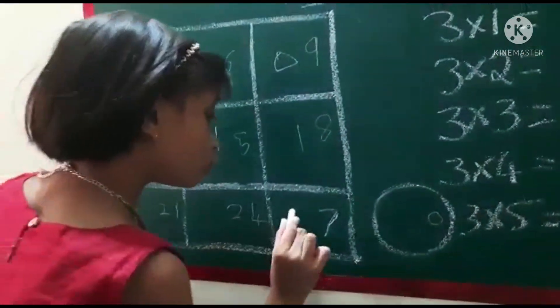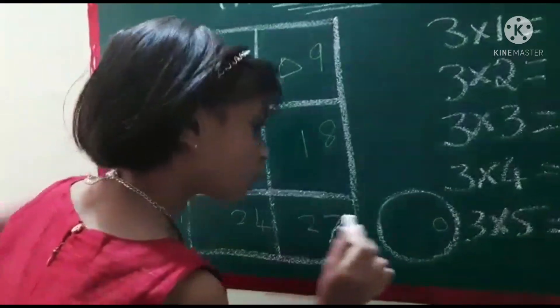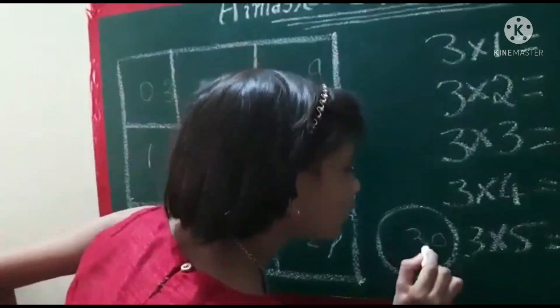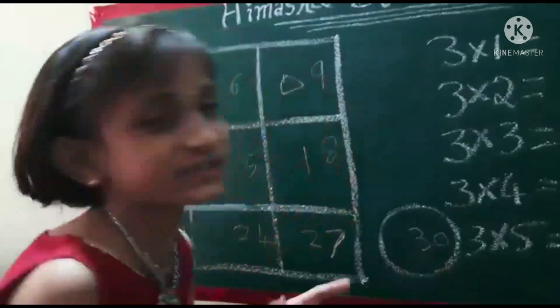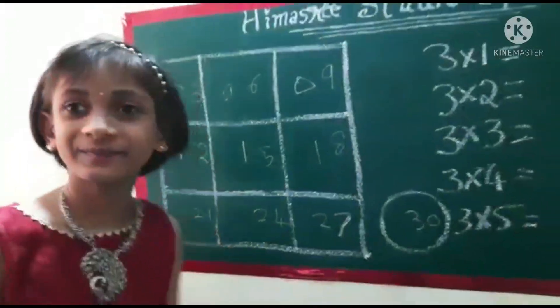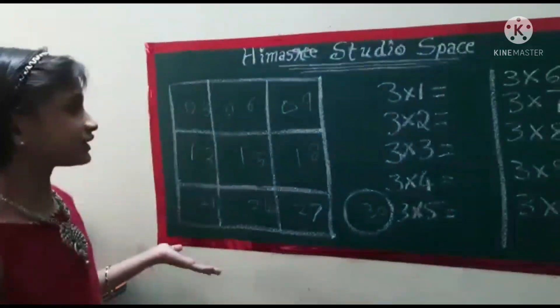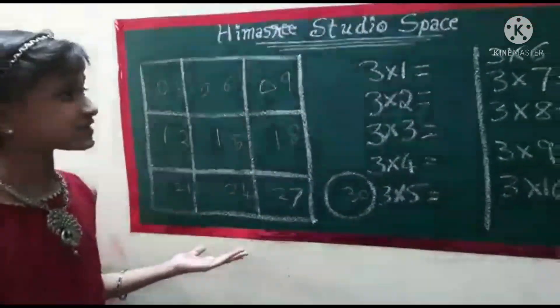Then we write 2, 2, 2, and next to the zero we will be writing 3. And here you go — the 3 times table.